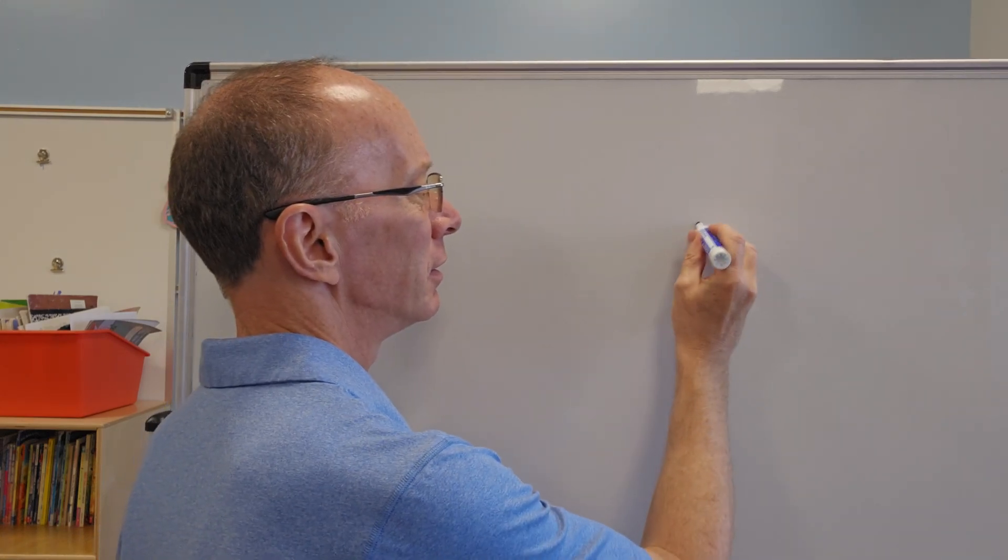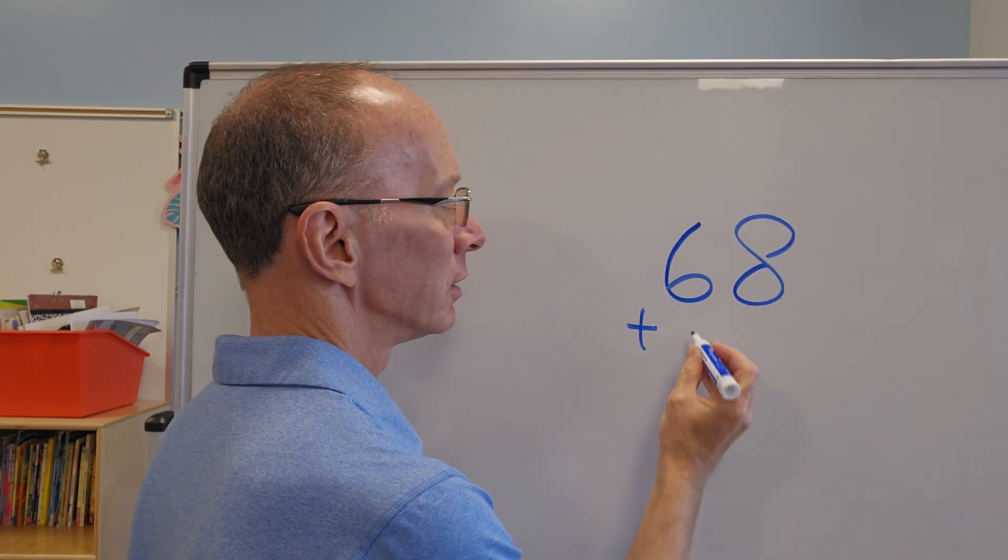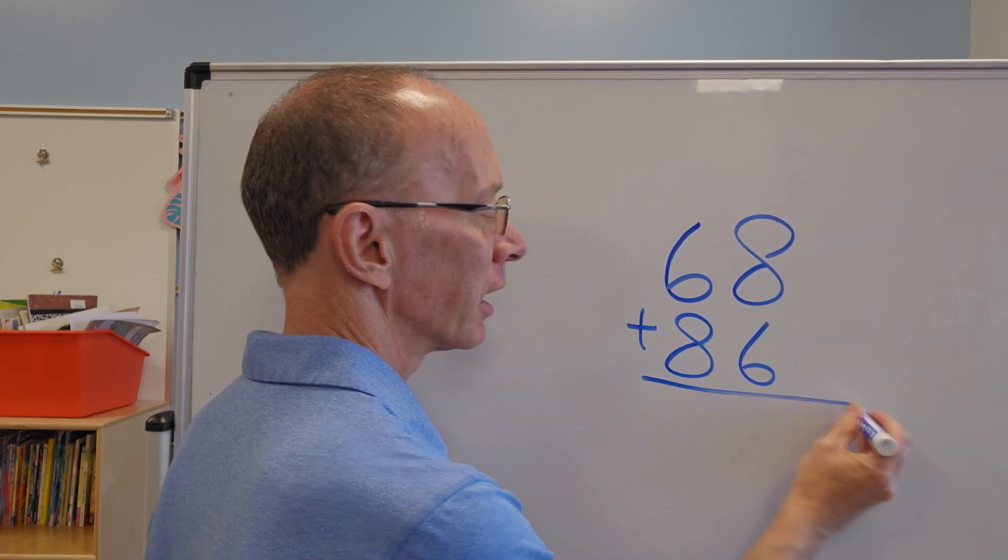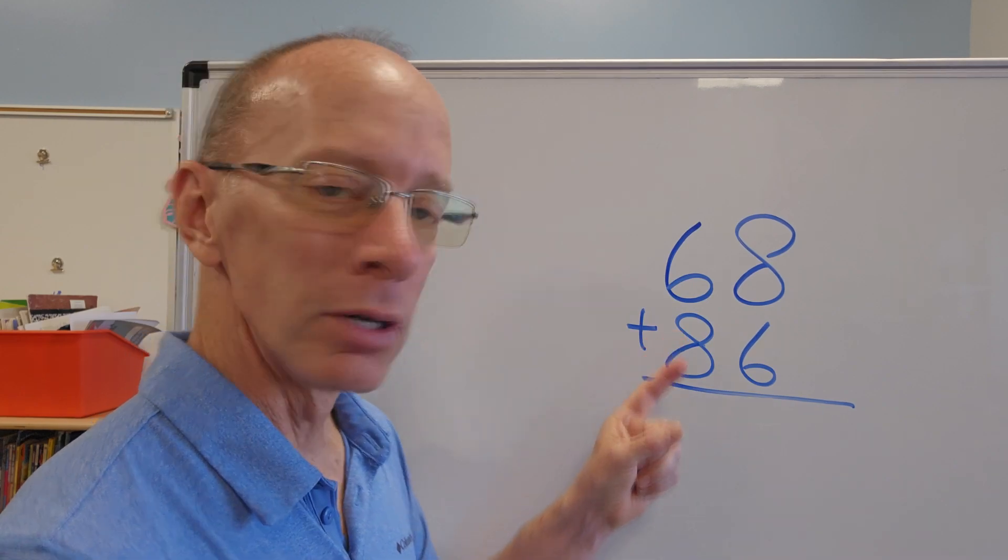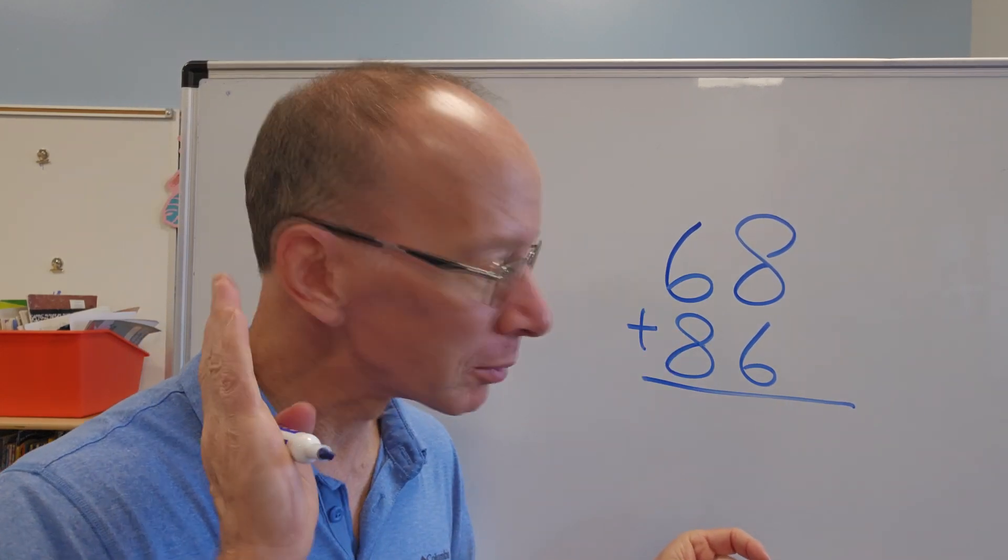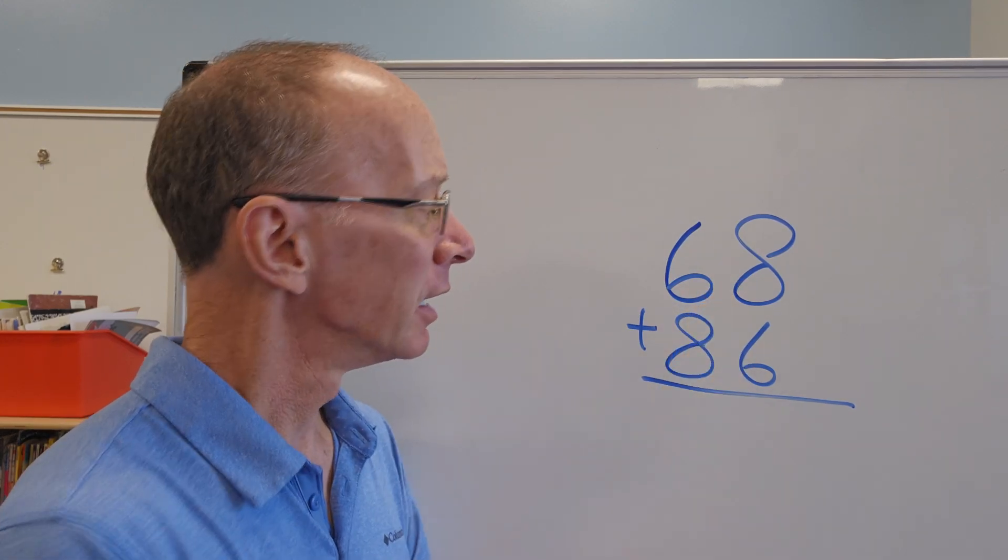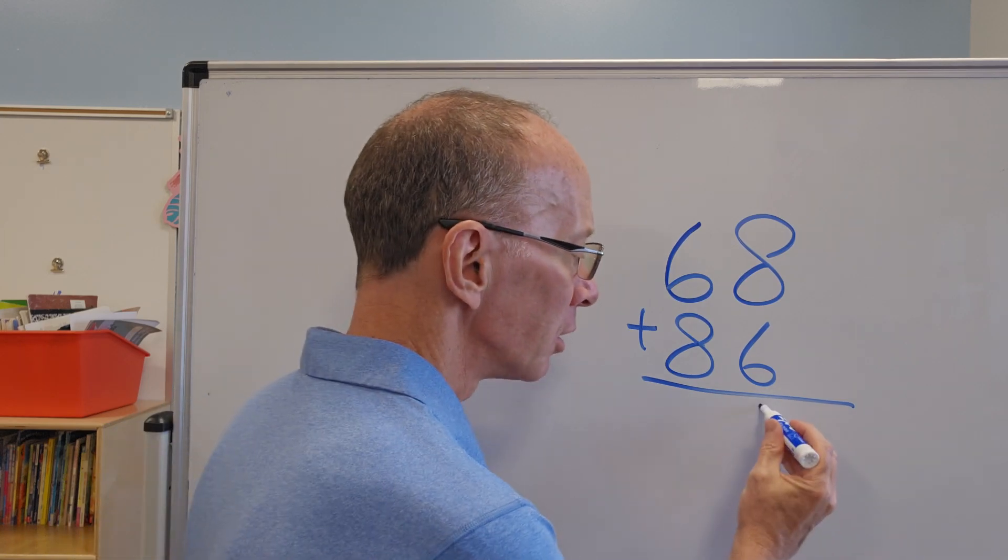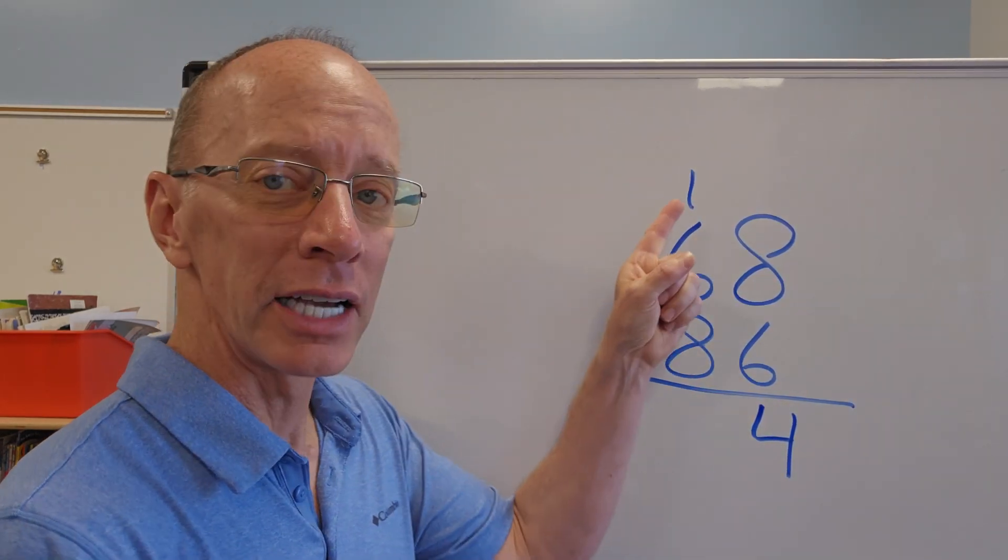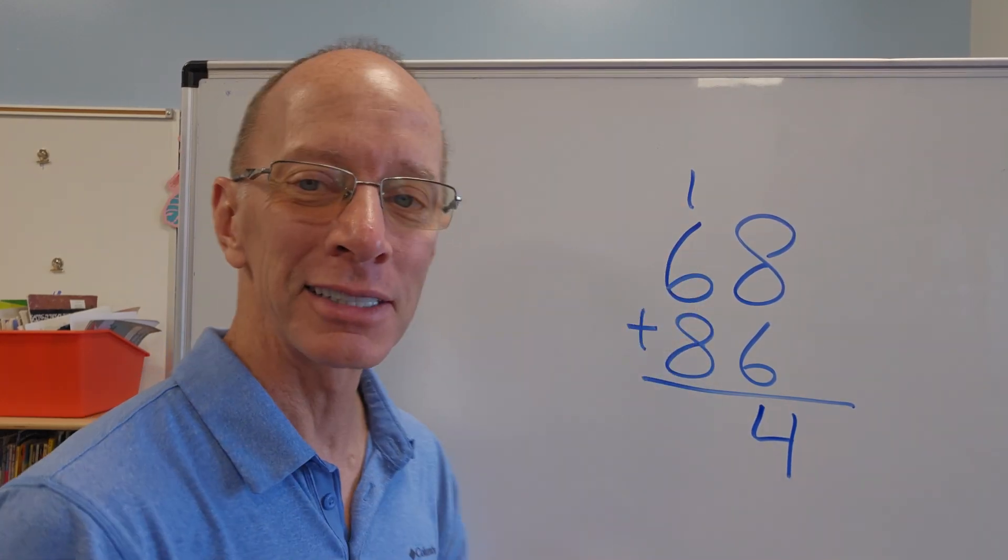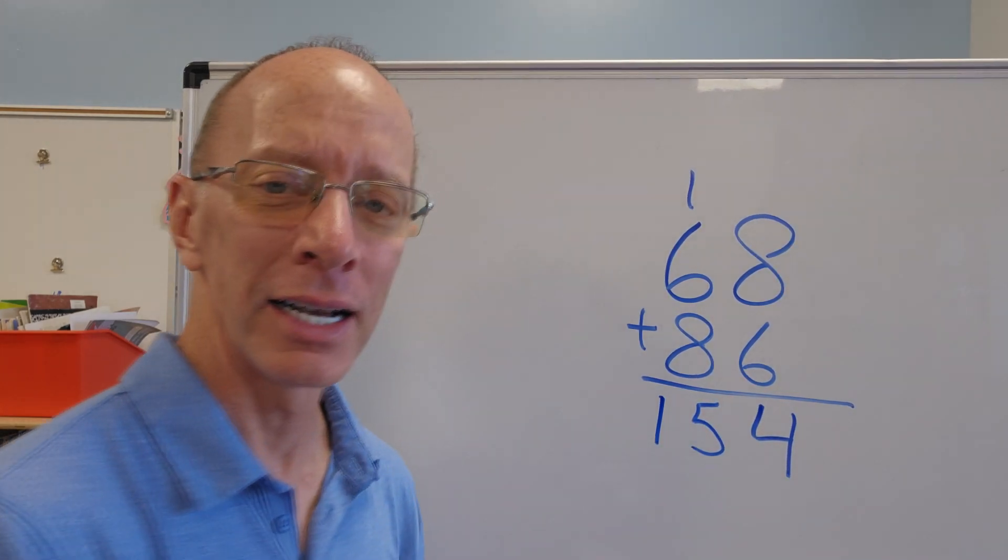All right. Let's do 68 plus 86. Kind of switched those numbers around, didn't I? What do I do again? Tell me. I'm listening. What do I do? Yeah. We add the ones. So 8, 9, 10, 11, 12, 13, 14. All right. So I put the 4 right here. Carry the 1. 8 plus 1 is 9. And 9 plus 6 equals 15. Yeah. I sure had fun. I hope you're having fun there too.